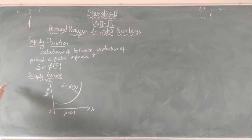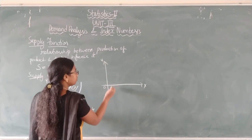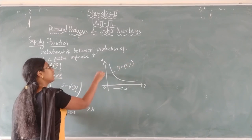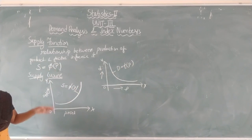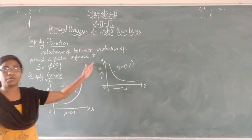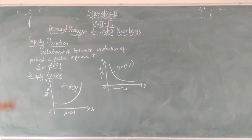From the demand and supply curves, the demand curve tends to fall from left to right — as price increases, demand decreases. Whereas the supply curve goes upward from left to right — as price increases, supply also increases.